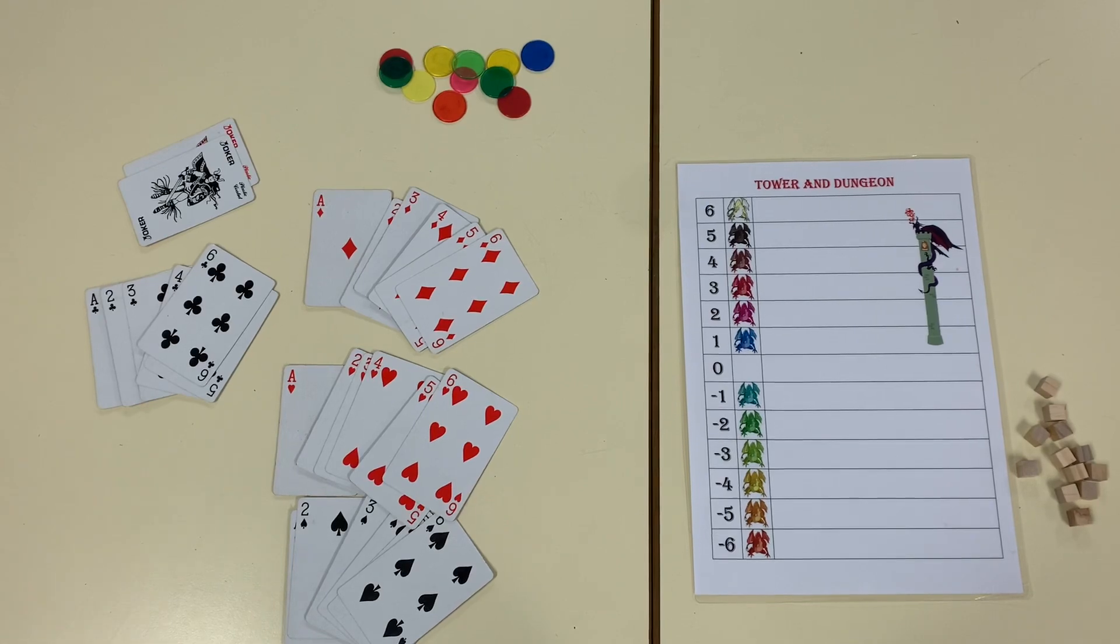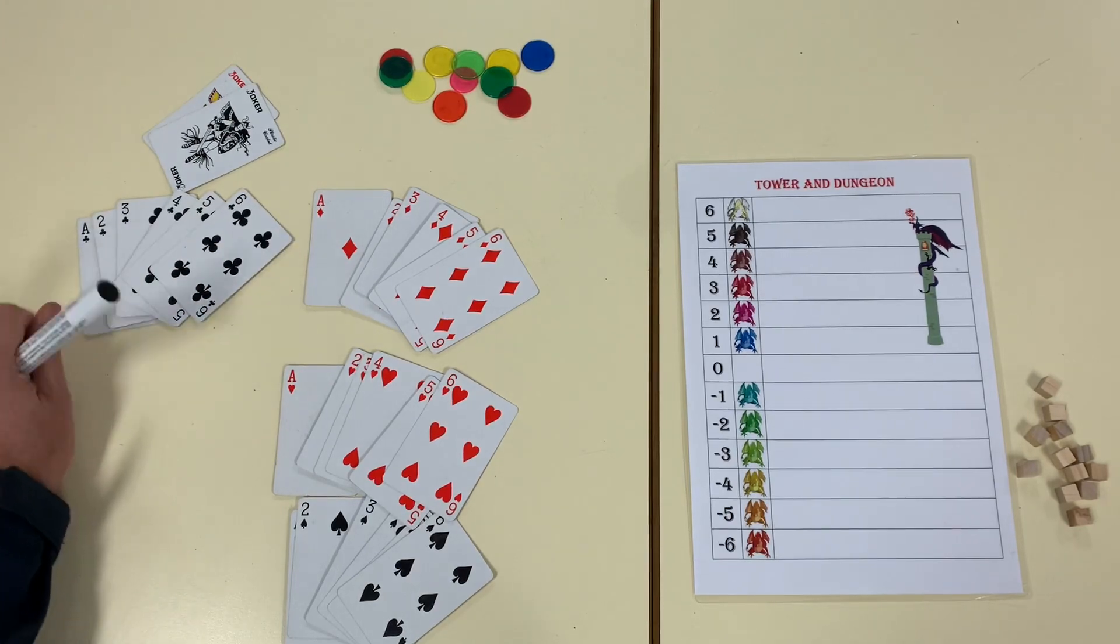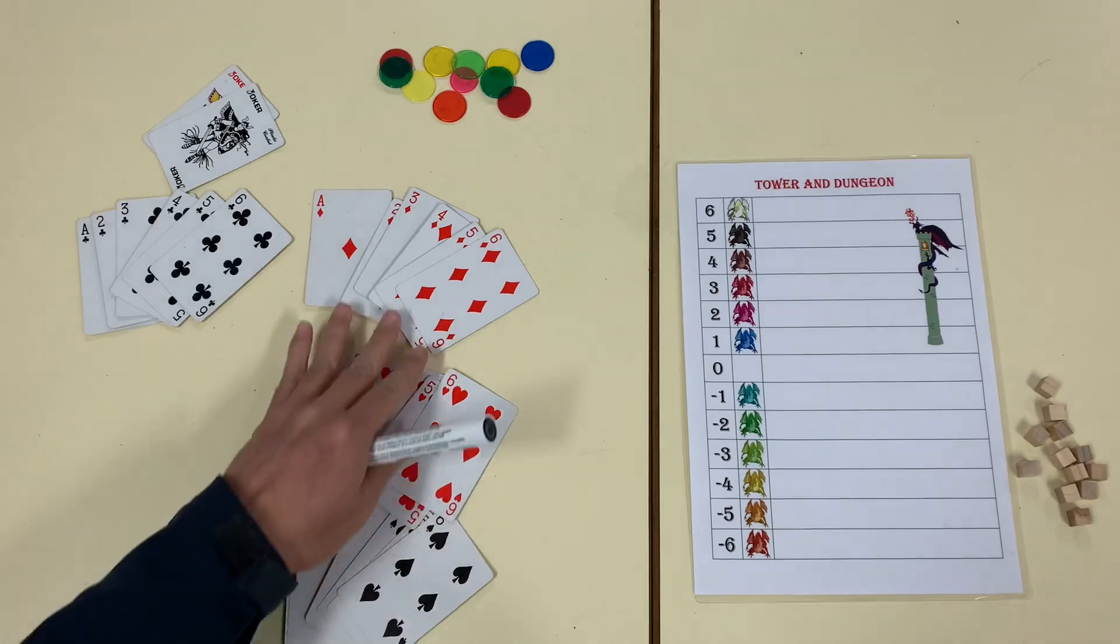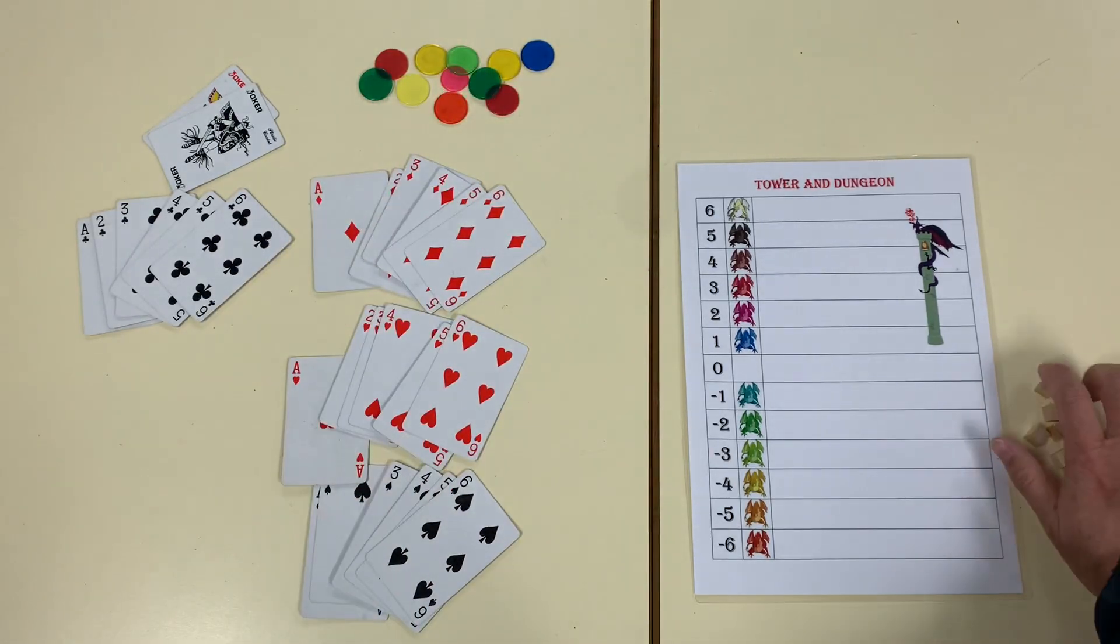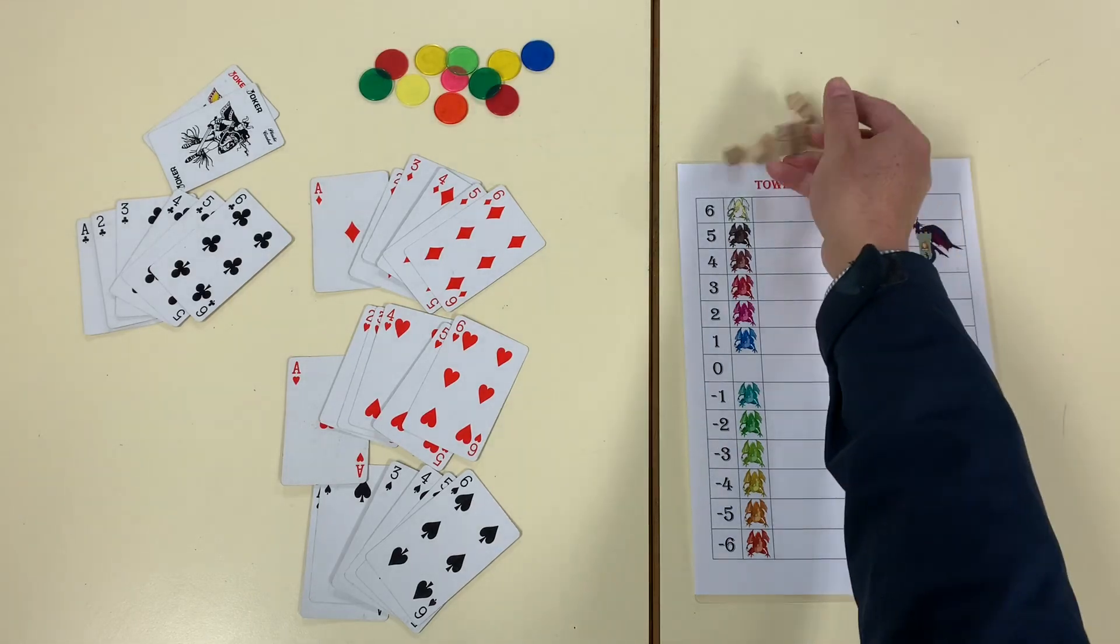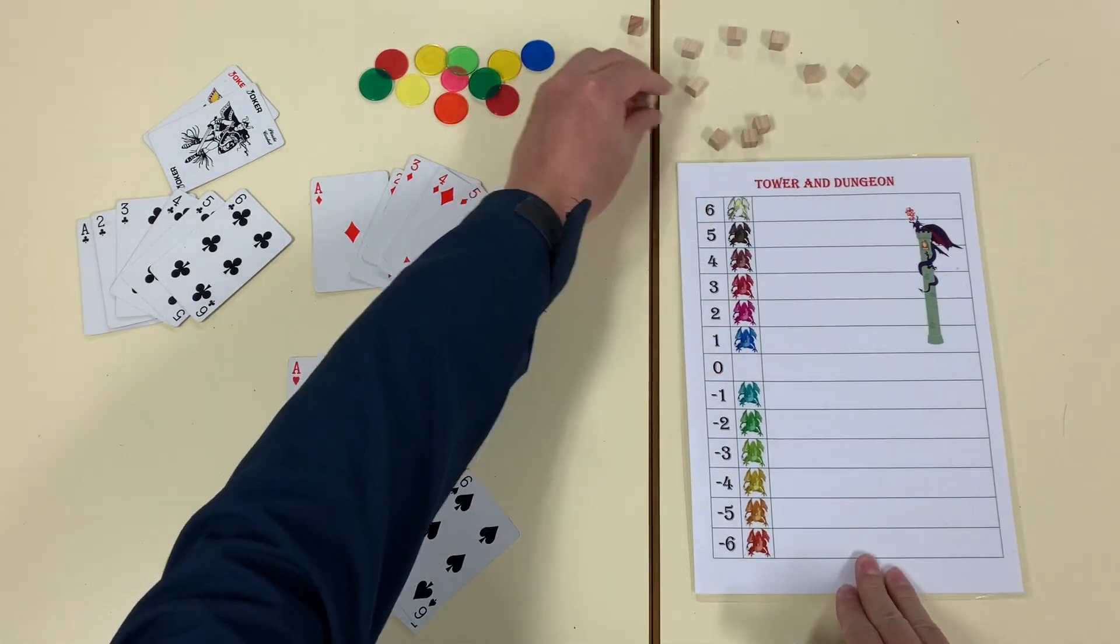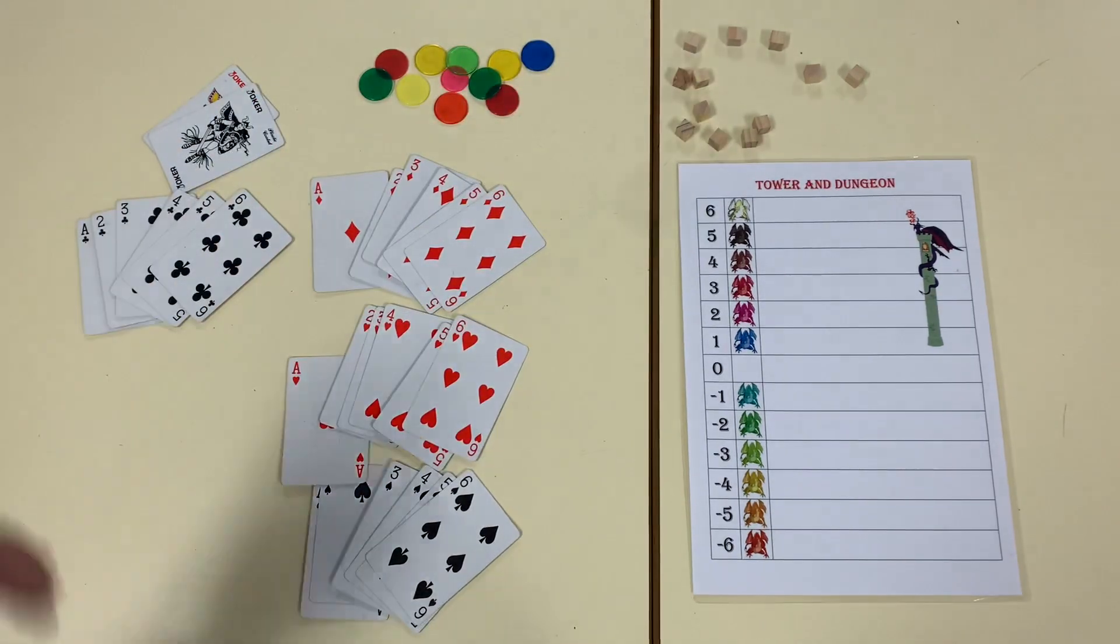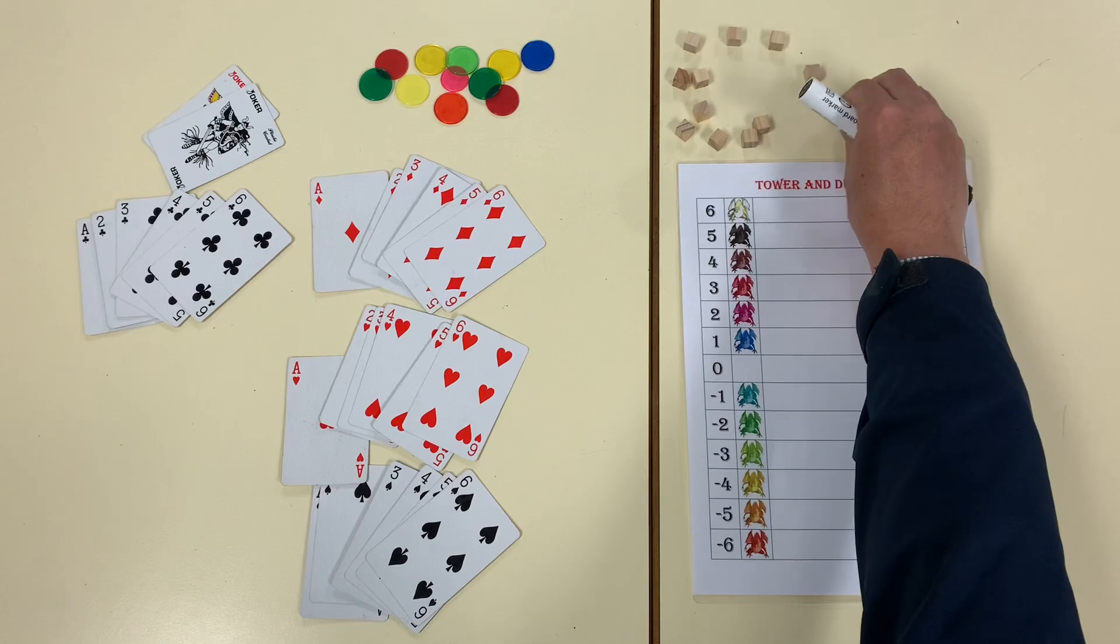What you need: you need a deck of cards, but only the cards from one or ace to six in each suit. You need either counters or cubes to indicate which floor you have been to. I'm going to use a cube as a player.